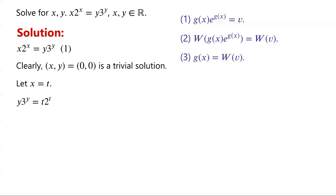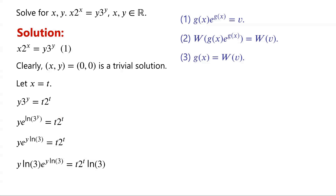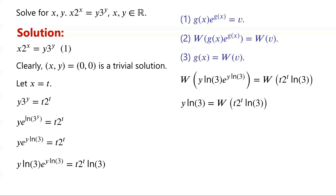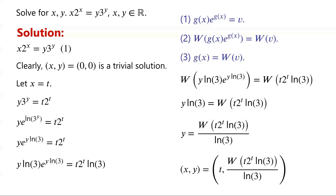To transform the equation into the required form, we rewrite 3 to the power of y as e to the power of ln(3) times y, since ln(3^y) equals y times ln(3). Multiplying both sides of the equation by ln(3), we have transformed the equation into the required form. Applying the Lambert W function to both sides, the left-hand side becomes y times ln(3). Dividing by ln(3), we get y equals W(t times 2^t times ln(3)) over ln(3). So a parametric solution is (x, y) = (t, W(t times 2^t times ln(3)) / ln(3)).